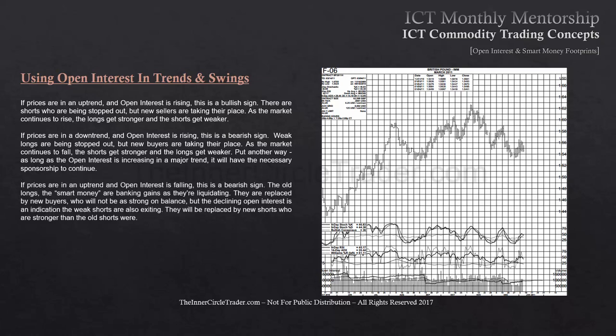If prices are in an uptrend and open interest is falling, this is a bear sign. The old longs — the smart money in this case — are banking gains as they're liquidating. They are replaced by new buyers who do not have the strength on balance, but the declining open interest indicates that weak shorts are also exiting. They will be replaced by new shorts who are stronger than the old shorts that were trading earlier but got squeezed out.